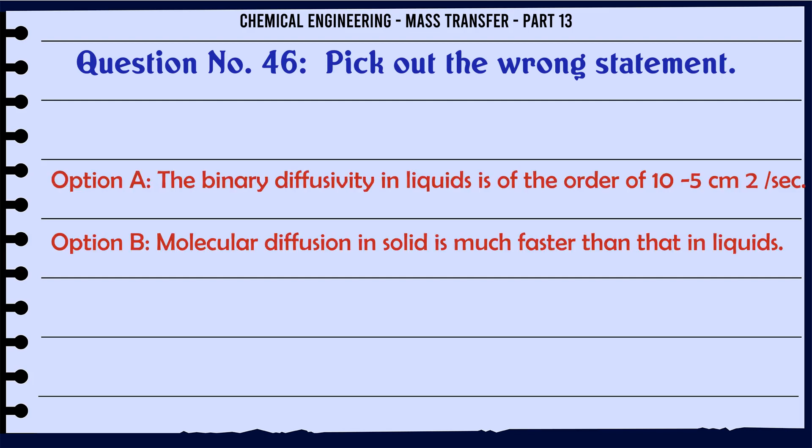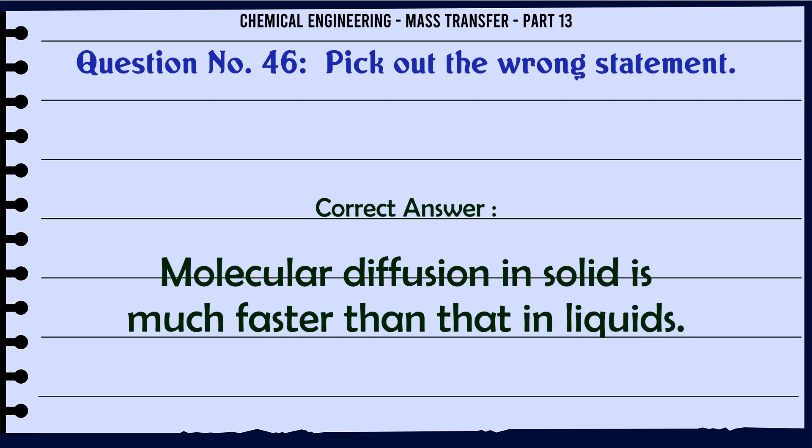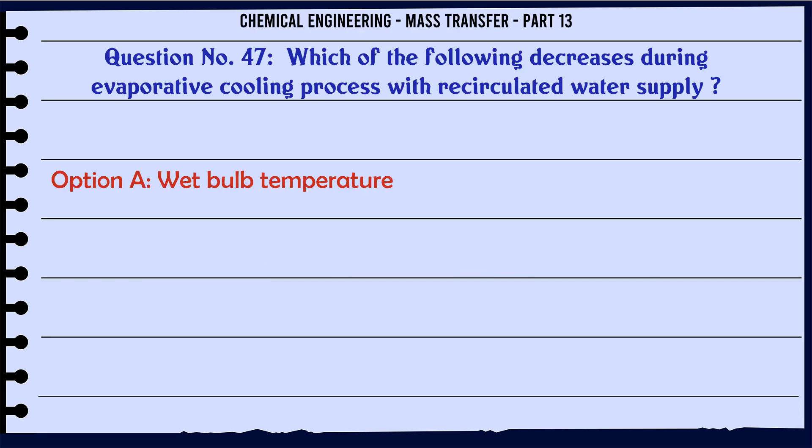Pick out the wrong statement: A. The binary diffusivity in liquids is of the order of 10⁻⁵ cm²/sec. B. Molecular diffusion in solids is much faster than that in liquids. C. Particle movement from higher concentration to lower concentration takes place in the diffusion process. D. According to Poiseuille's law, permeability decreases with increase in temperature for flow of a gas through a given capillary. The correct answer is: Molecular diffusion in solids is much faster than that in liquids.